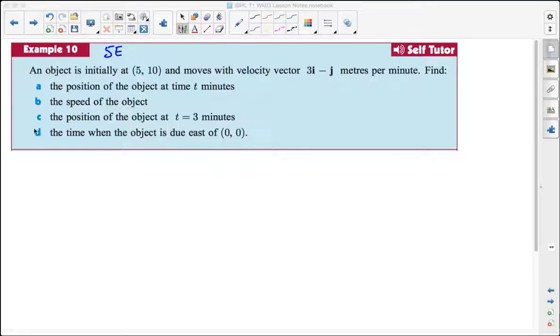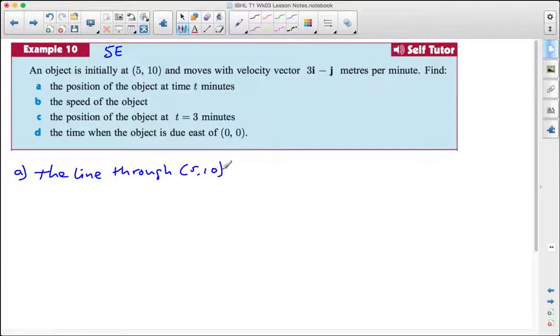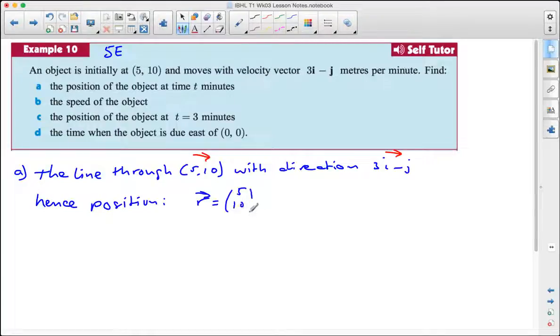Now that in vectors translates to the line through (5,10) with direction 3i take j. Both of these can be written as vectors, hence the position can be written as the position vector r equals (5,10) plus t times (3, negative 1).